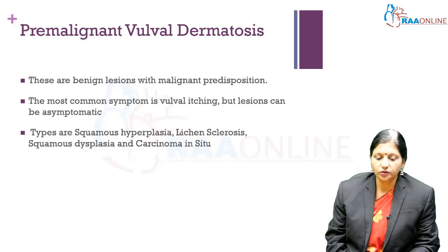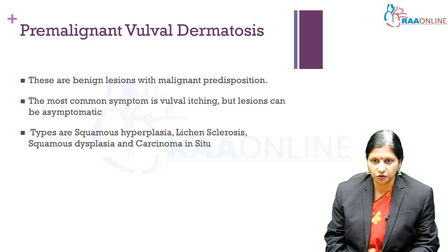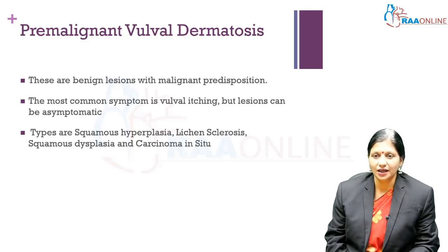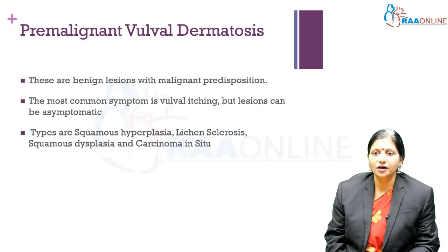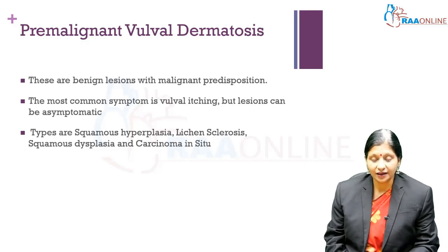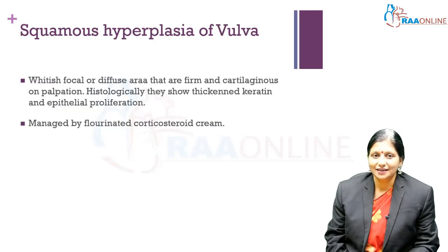The premalignant vulval lesions to be discussed include squamous hyperplasia, lichen sclerosis, squamous dysplasia, and carcinoma in situ of the vulva. All these lesions share the common complaint of vulval itching, but to distinguish between them, biopsy of the vulval lesions is required. Together they are called vulval dermatoses, and all four carry a malignant predisposition towards the keratinizing variety of carcinoma vulva.